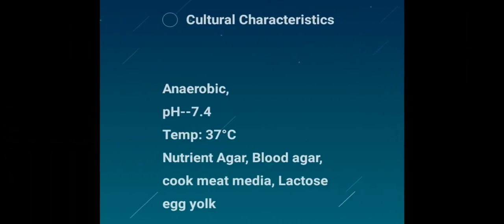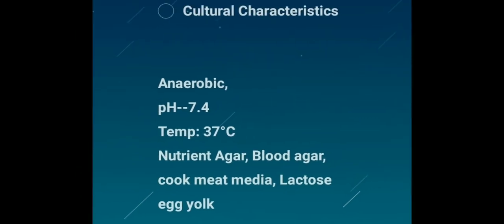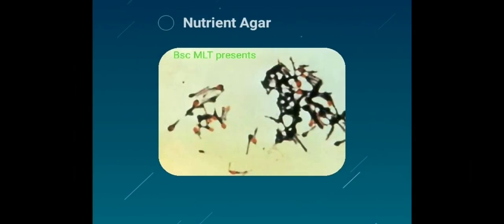Cultural Characteristics: Clostridium tetani is an obligatory anaerobe that grows only in the absence of oxygen, at an optimum pH of 7.4 and temperature of 37 degrees centigrade. Growth is improved by serum and blood, and not by glucose. Growth is extremely fine and translucent, i.e., semi-transparent. It is cultured in nutrient agar, blood agar, cooked meat media, and lactose yolk media.